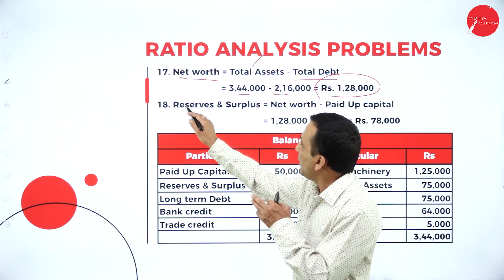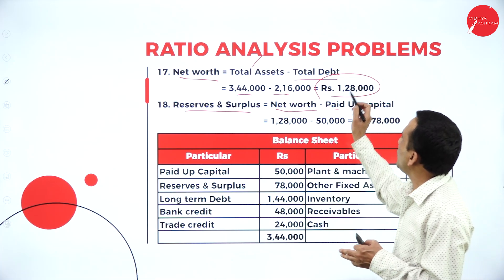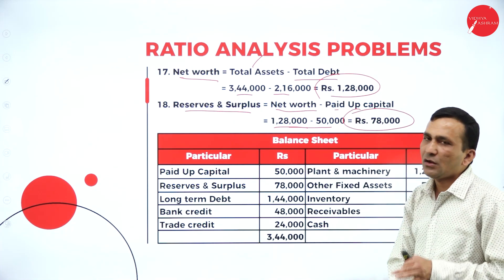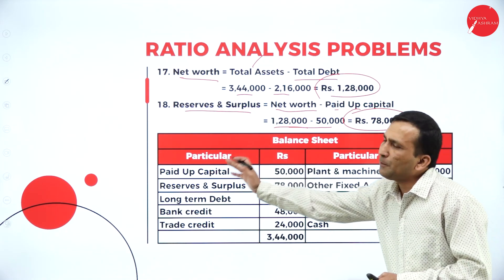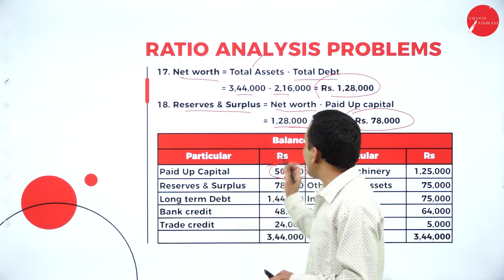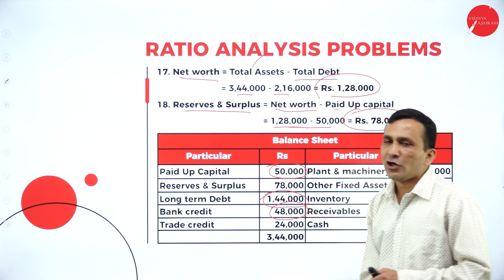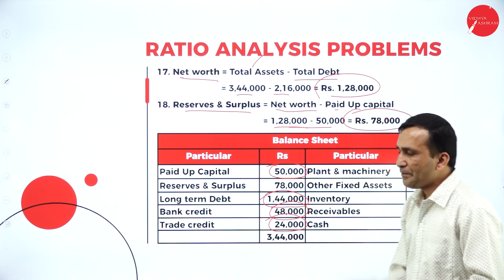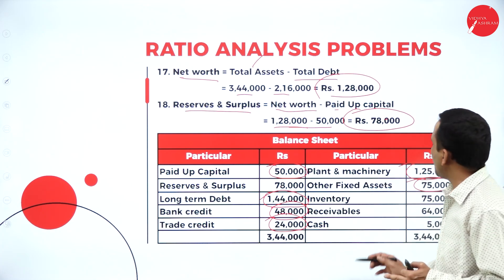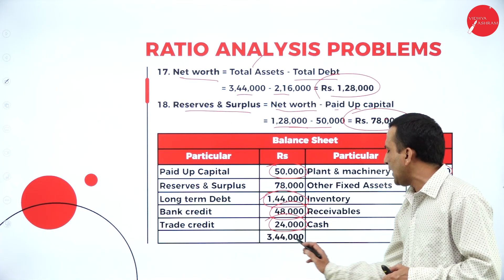Reserves and surplus are calculated as net worth minus paid-up capital: 1,28,000 minus 50,000 gives 78,000. Now posting to the balance sheet: paid-up capital is 50,000, reserves and surplus 78,000, long-term debts 1,44,000, bank credit 48,000, trade credit 24,000. On the assets side: plant and machinery 1,25,000, other fixed assets 75,000, inventory 75,000, receivables 64,000, cash 15,000. Both sides tally at 3,44,000.